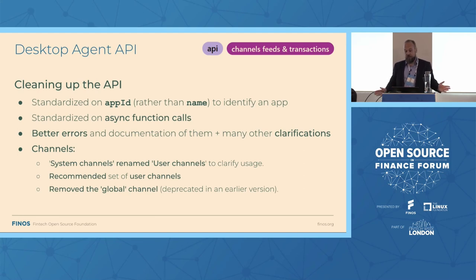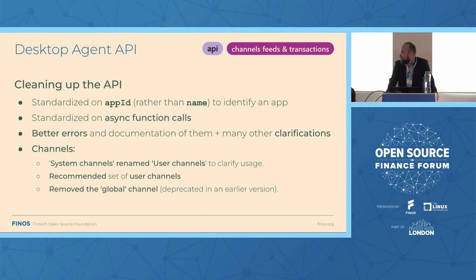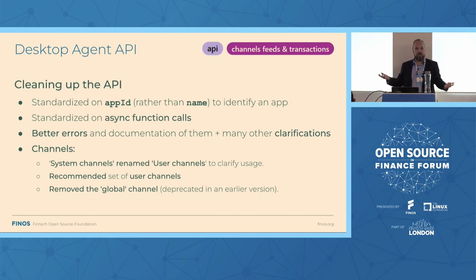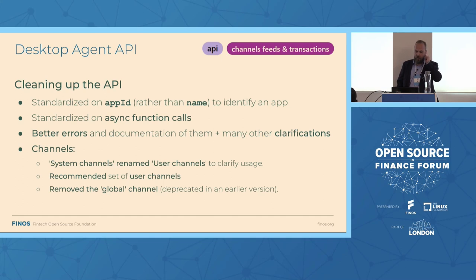We've also dealt with a huge amount of cleanup in the FDC3 API, such as standardizing on the AppD's AppID field rather than the non-unique name field that people ran into trouble with. We've standardized on async function calls for consistency and better developer experience. We've got better errors and descriptions of what they should be used for, along with a bunch of other clarifications. The channel support has also been improved — we've got a new name for system channels. After explaining how channels work to dozens of developers at dozens of different companies and they all wanted to know 'why is it called a system channel?', we've renamed it a 'user channel' because it's the user who sets these things. We also removed the old global channel from FDC3 1.0 and added a recommended set of channels, which will be important when we start bridging desktop agents together.